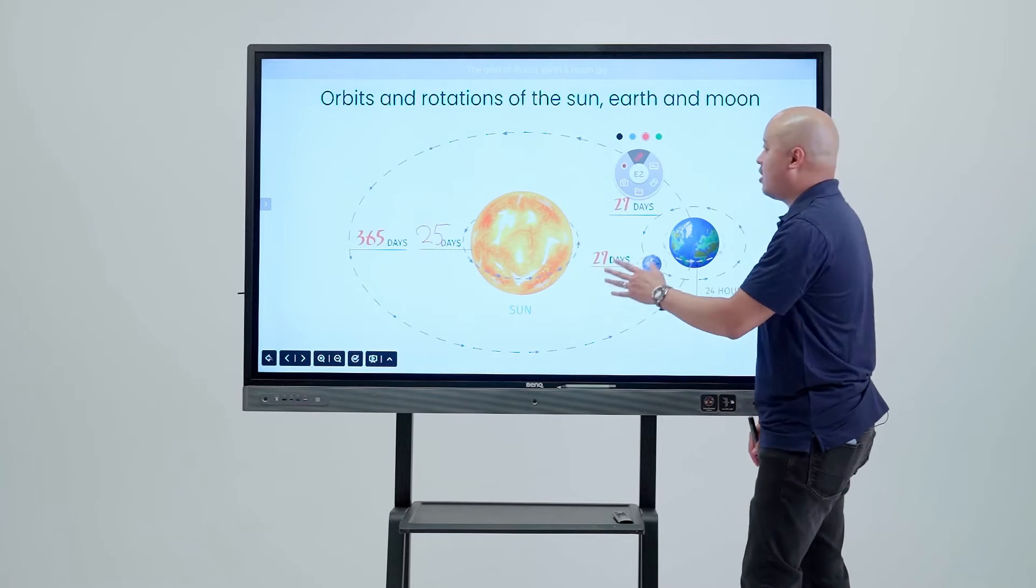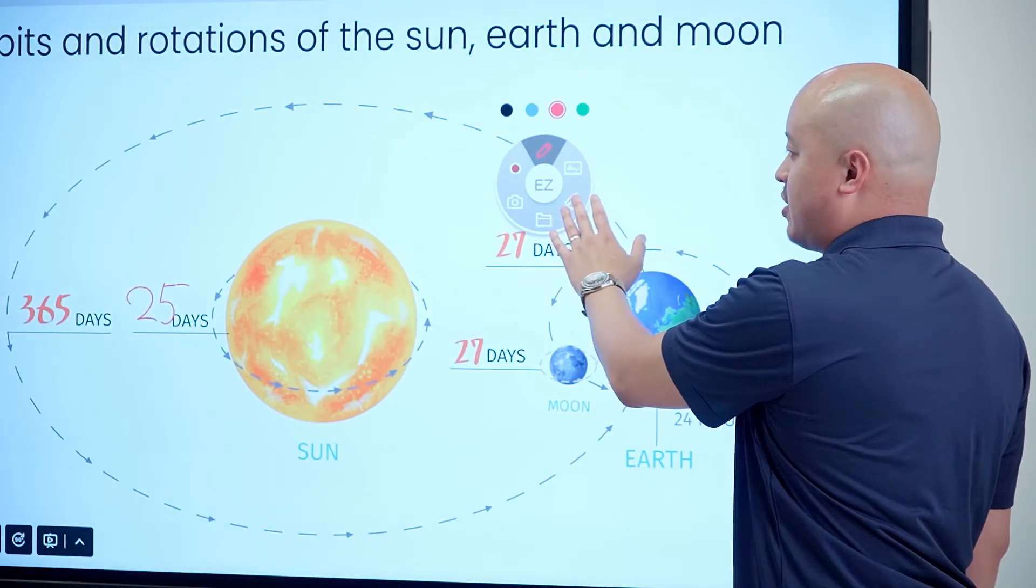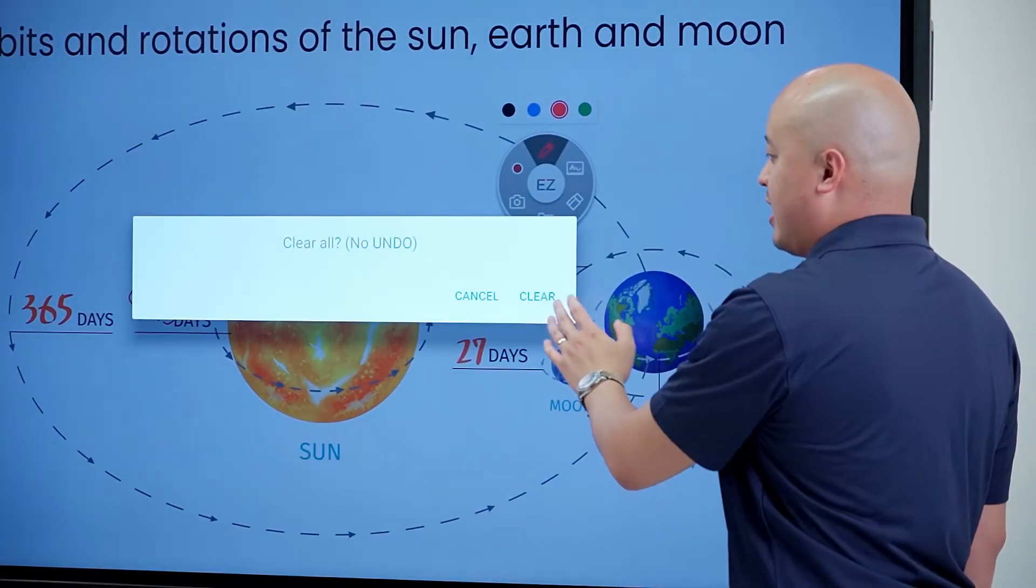If you need to clear your annotation, all you have to use is the eraser icon here on the floating tool and now we can clear it away.